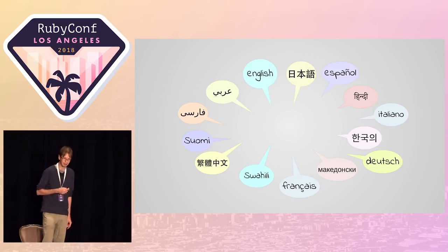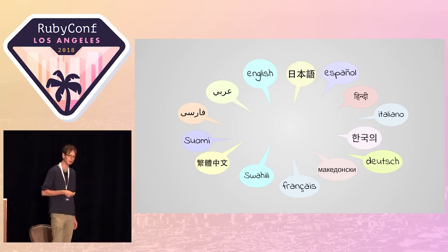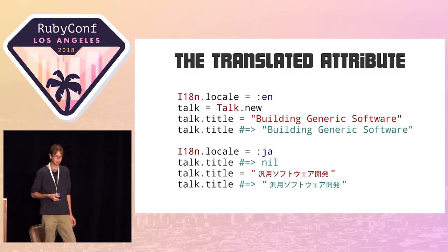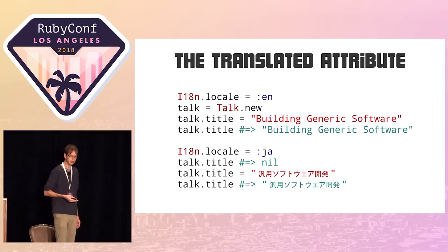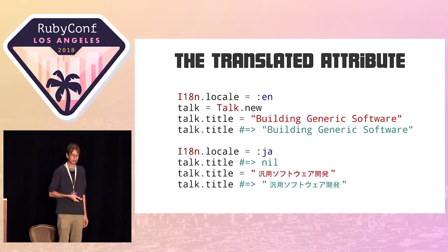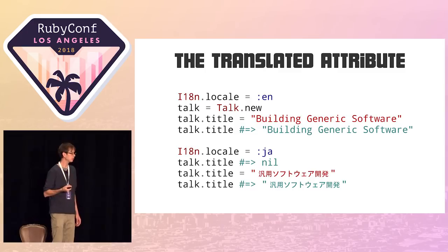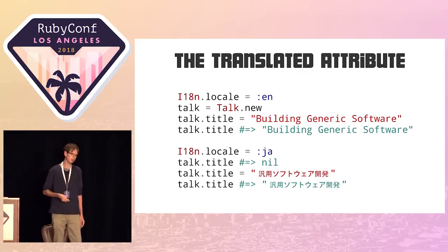We're going to start from a specific example and see if we can come to something more general. I'm going to pick the topic of translation, because translation was my entry point into the Ruby community — I was working on a translation platform. The idea we're going to look at is translated attributes. It's a pretty simple idea: you have some global language, and like any attribute accessor, you create a class, create an instance, set your title to 'building generic software,' and get it back. But then we change the locale to Japanese and get nil, because this is a translated attribute — depending on which language you're in, you get the translation for that language.